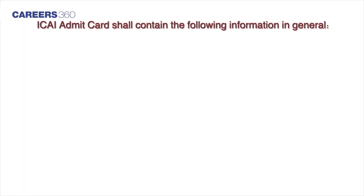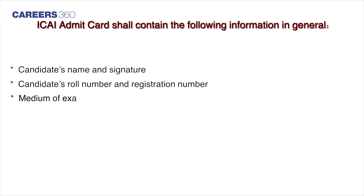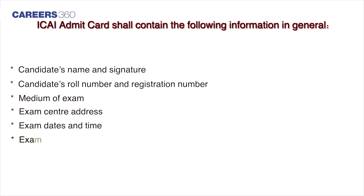The ICAI Admit Card contains the following information in general: Candidate's Name and Signature, Candidate's Registration Number and Roll Number, Medium of Exam, Exam Center Address, Exam Dates and Time, and Exam Day Instructions.